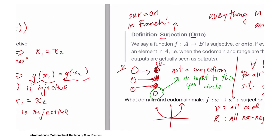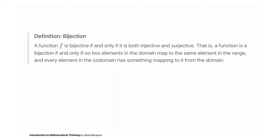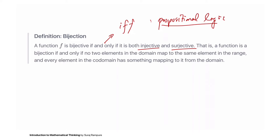Now we know what an injection is and what a surjection is. A nice problem is: how could you modify f(x) = x² so that it is both an injection and a surjection? Speaking of functions that are both injections and surjections, a function is a bijection when it's both an injection and a surjection — if and only if (IFF, which we'll discuss in propositional logic) it satisfies both properties.